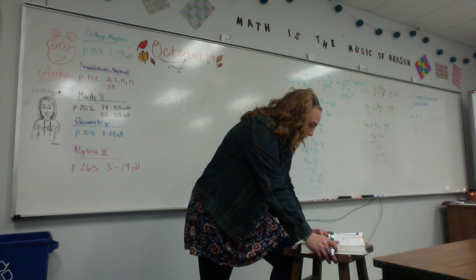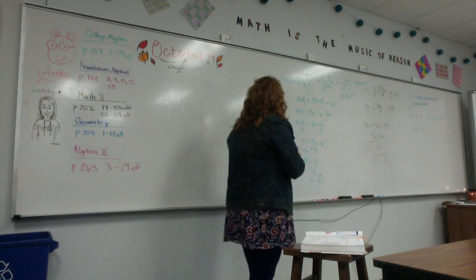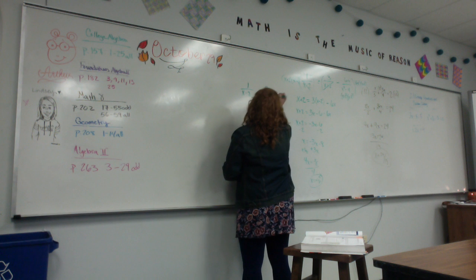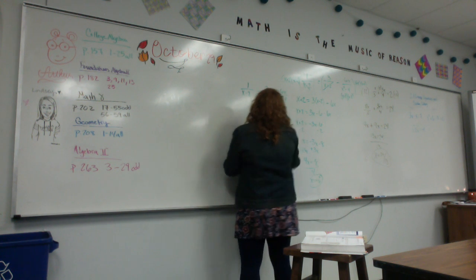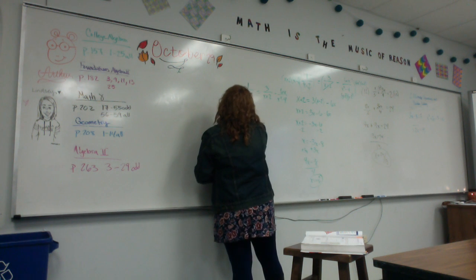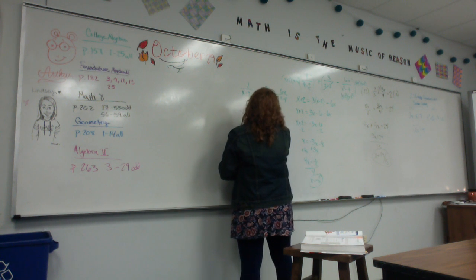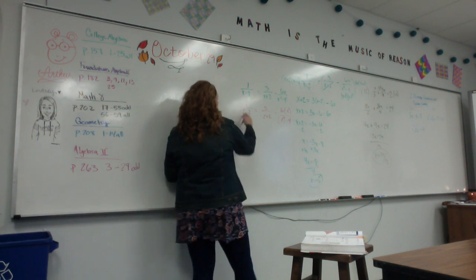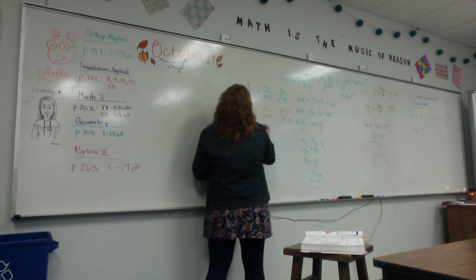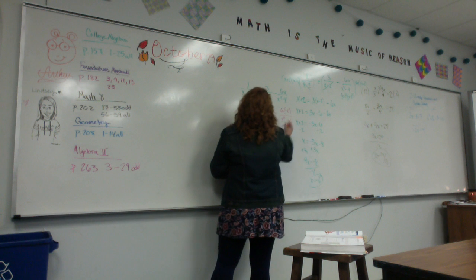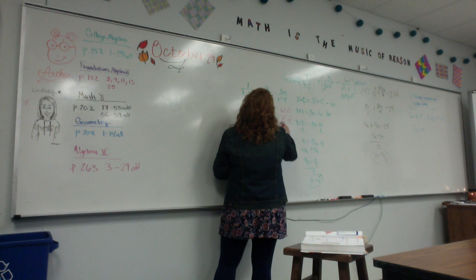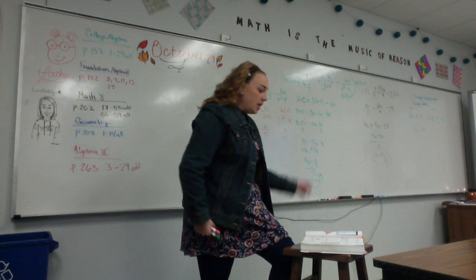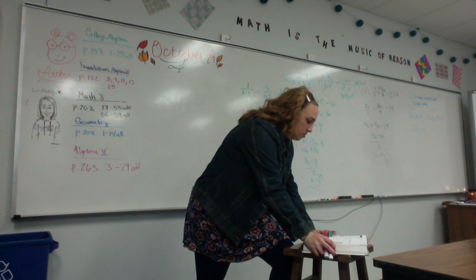x minus 2 yields a denominator of 0. If I plug negative 2 back in to the original equation of 1 over x minus 2 equals 3 over x plus 2 minus 6x over x squared minus 4, plugging negative 2 into all the x spots, I would get 1 over negative 4 here, and over 0 here, and negative 12 over 0 here. You can't have 0 in the denominator. So x equals negative 2 is something called an extraneous solution.